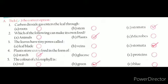First question: Carbon dioxide gas enters the leaf through? Options are roots, stem, stomata. Answer is stomata. Second question.